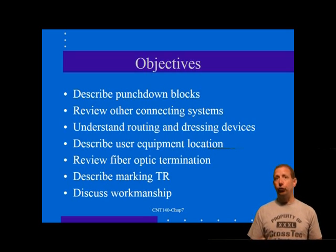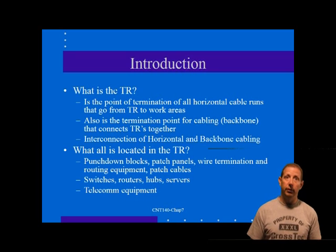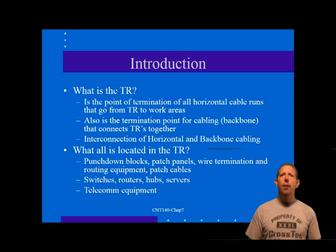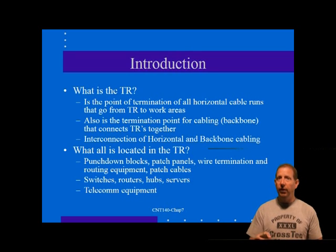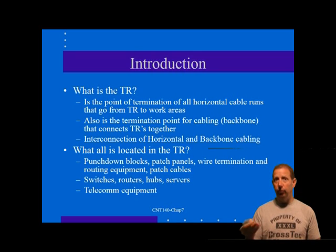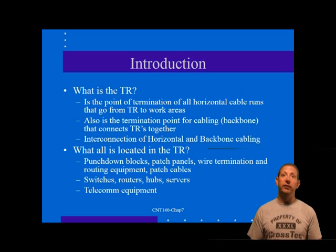The telecommunications room is another important area in the chain of wiring devices that makes up a structured LAN wiring installation. The telecommunications room, or TR, is the point of termination of all horizontal run cables that go from the TR to workstation areas, as well as cables that interconnect to other TRs. The TRs typically contain punch down blocks and patches, and other termination and wiring devices necessary for the interconnection of horizontal and backbone cabling. It may also contain various types of equipment such as wiring hubs, routers, and even network servers.